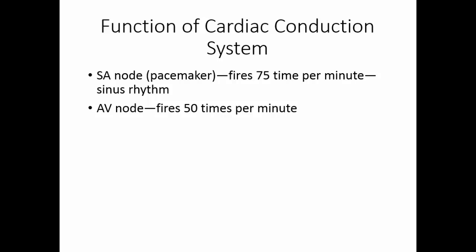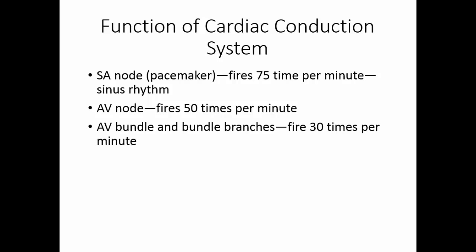The AV node will fire about 50 times per minute, and the AV bundle and bundle branches can fire 30 times per minute. Because the SA node fires faster, every time it fires it clears any buildup going on in the AV node or AV bundle, so they have to start over. The fastest pacer controls the heart — in a normal heart, that's the SA node.